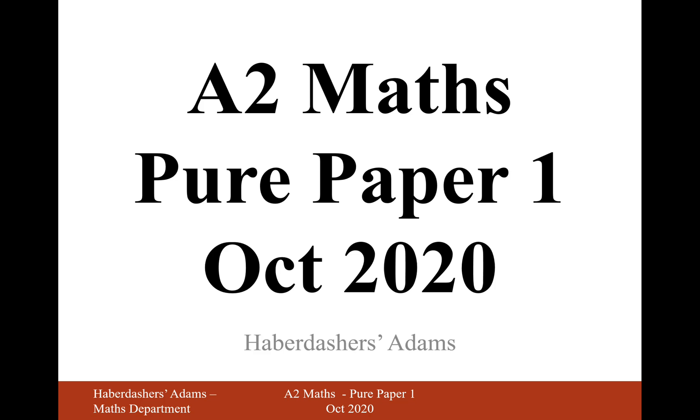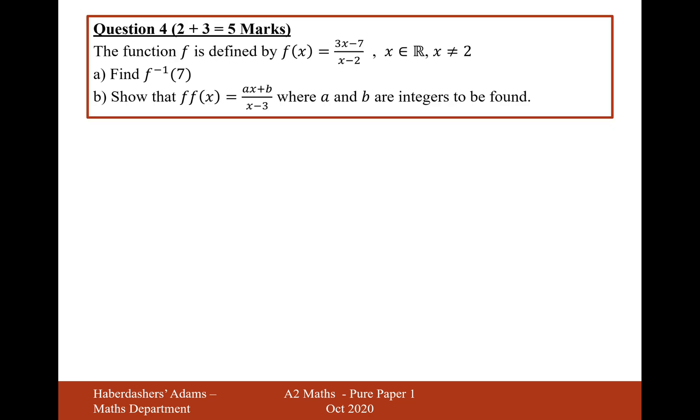Hello there and welcome to the October 2020 paper. Here we're looking at question 4. The function f is defined by f of x equals 3x minus 7 over x minus 2. Find f inverse of 7.